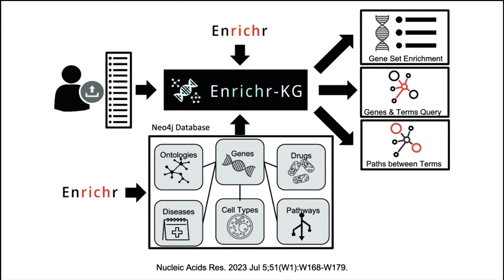This is the idea behind Enrichr KG, or Enrichr Knowledge Graph. We converted some of the more popular Enrichr libraries — containing information on ontologies, genes, drugs, diseases, cell types, and pathways — into knowledge graphs. We currently have over 20 libraries. Using this approach, we are able to provide integrated gene set enrichment analysis, as well as gene and term queries, where you start with a gene or term and it returns the immediate neighbors of that entity.